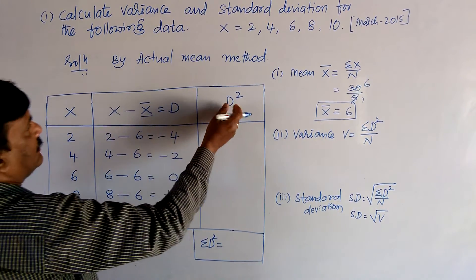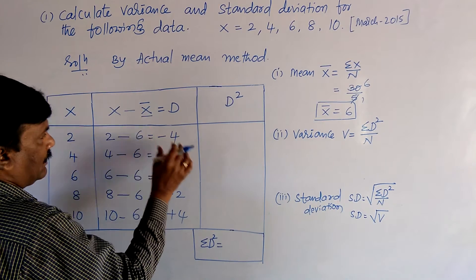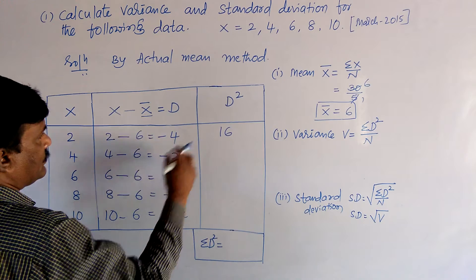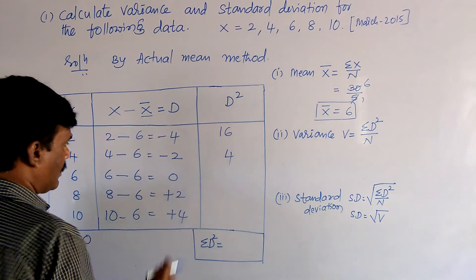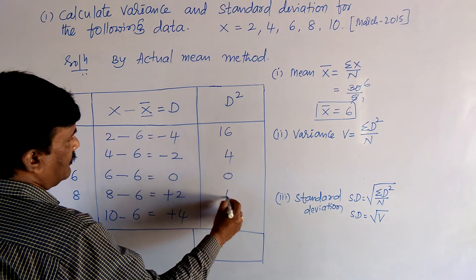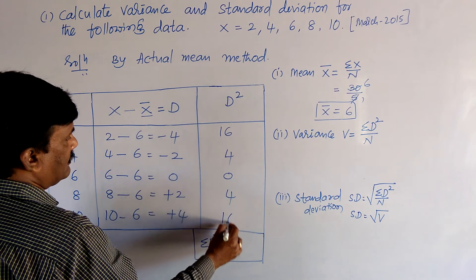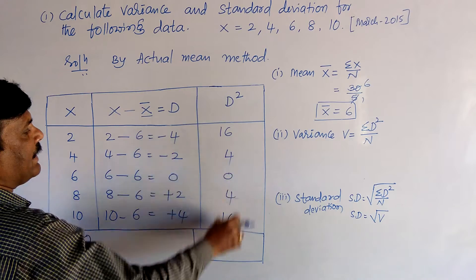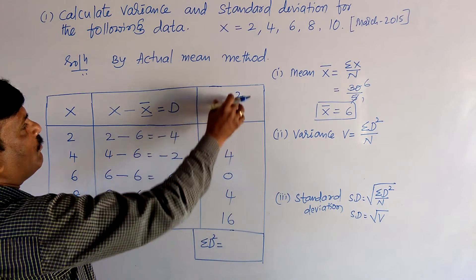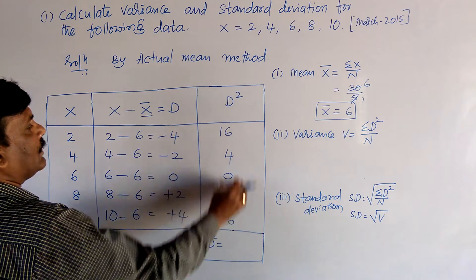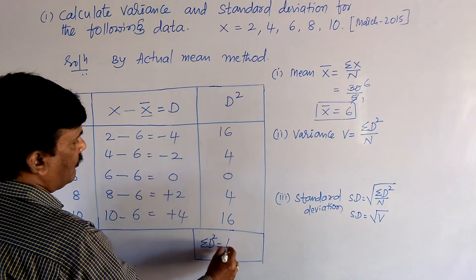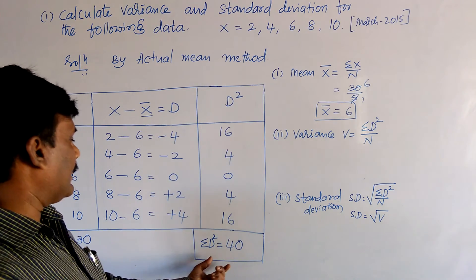Next we get d², the square of each deviation: (−4)² = 16, (−2)² = 4, 0² = 0, (+2)² = 4, (+4)² = 16. Adding these values gives σd², the sum of d squared: 16 + 4 = 20, 20 + 4 = 24, 24 + 16 = 40. So σd² = 40.